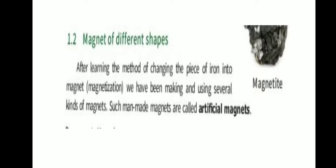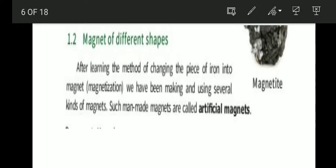After learning the method of changing a piece of iron into a magnet, we have been making and using several kinds of magnets. Such man-made magnets are called artificial magnets. There are two types of magnets: natural magnets and artificial magnets.